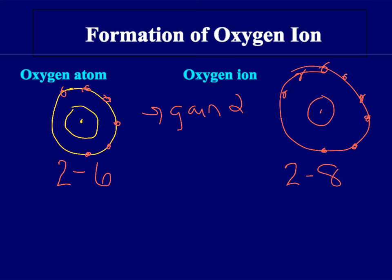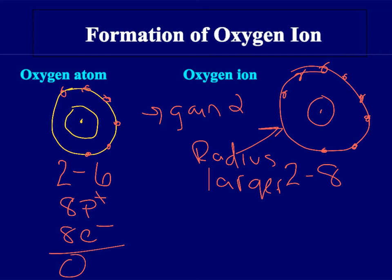This radius, the ionic radius, is larger because the electrons are able to pull away from the attraction of the protons. So here we have 8 protons and 8 electrons, giving us a charge of 0. Over here you have 8 protons still, but now we have 10 electrons, giving us a charge of negative 2.